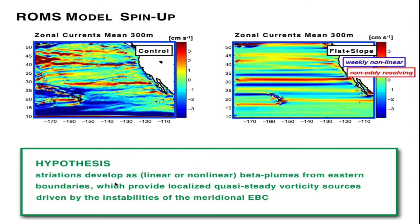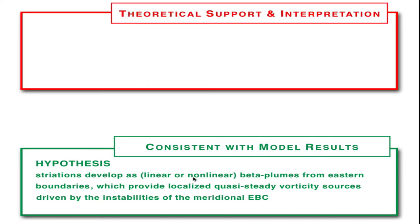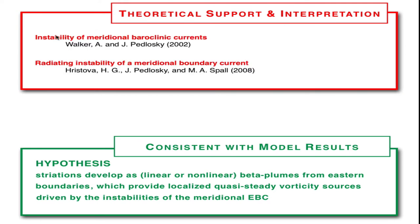Going back to our hypothesis, striations develop as linear or nonlinear beta plumes from eastern boundaries, where the eastern boundary provides the localized quasi-steady vorticity source that is perhaps energized and driven by the instability of the meridional eastern boundary current. These hypotheses seem to be consistent with our model results. We can also explore some of the theoretical support for this interpretation in two studies, one by Walker and Pedlosky that examined the instability of a meridional boundary current, and another one by Hristova-Veleva in 2008 that explored the radiating instability of a meridional boundary current. These studies both showed that meridional currents are unstable, and in particular, this second study shows how the radiating instability is asymmetric in nature with a zonal component of the wave that is much larger than the meridional component, and they speculate that this could indeed lead to the development of jet-like features in the large-scale flow away from the boundary, which is consistent with what we see in the model experiments.